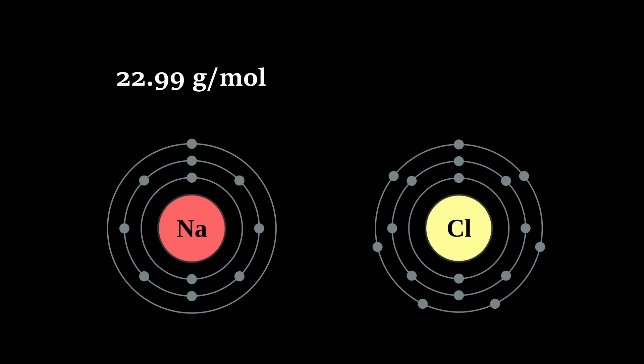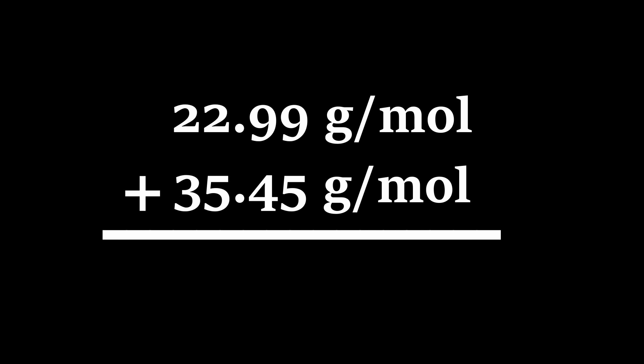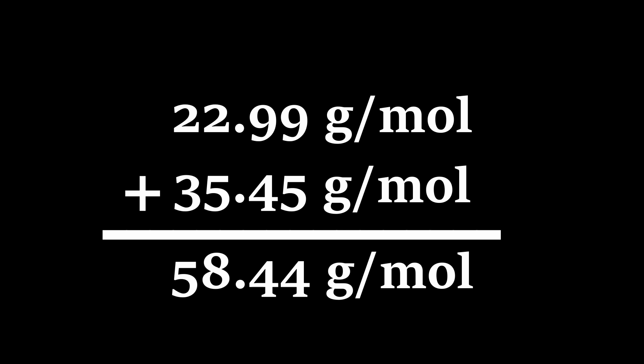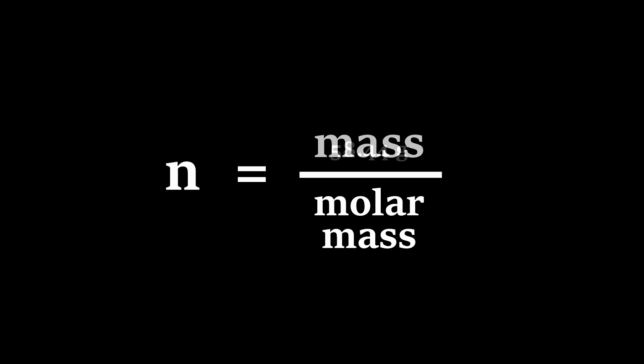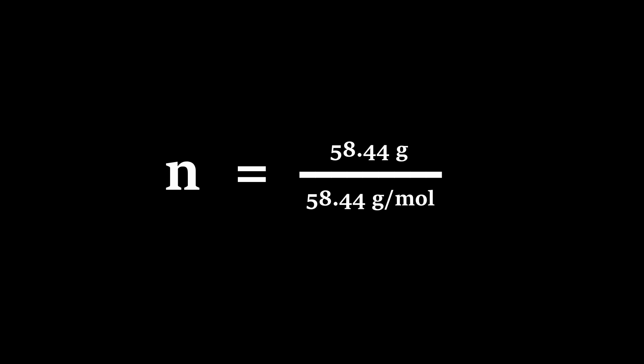Sodium has a molar mass of 22.99 grams per mole, and chlorine has a molar mass of 35.45 grams per mole. The molar mass of one molecule of salt is the sum of these two masses, which is 58.44 grams per mole. Since we have 58.44 grams of salt, we divide by 58.44 grams per mole to find the amount of moles of salt we have, which is exactly one mole.